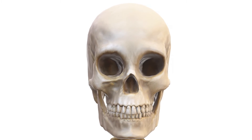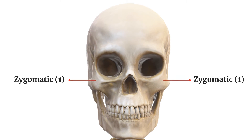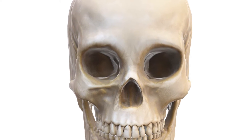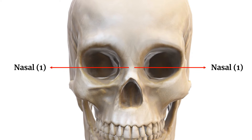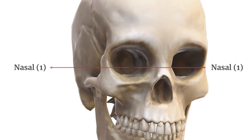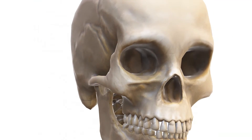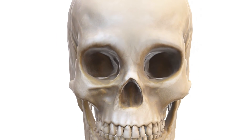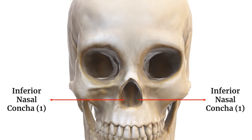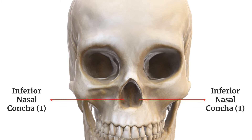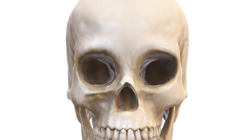Zygomatic bones: commonly known as cheekbones, they also form part of the eye sockets. Nasal bones: these small bones form the bridge of your nose. Palatine bones: these form the back part of the hard palate in the mouth. Inferior nasal conchae: curved bones inside the nasal cavity that help filter and humidify the air.